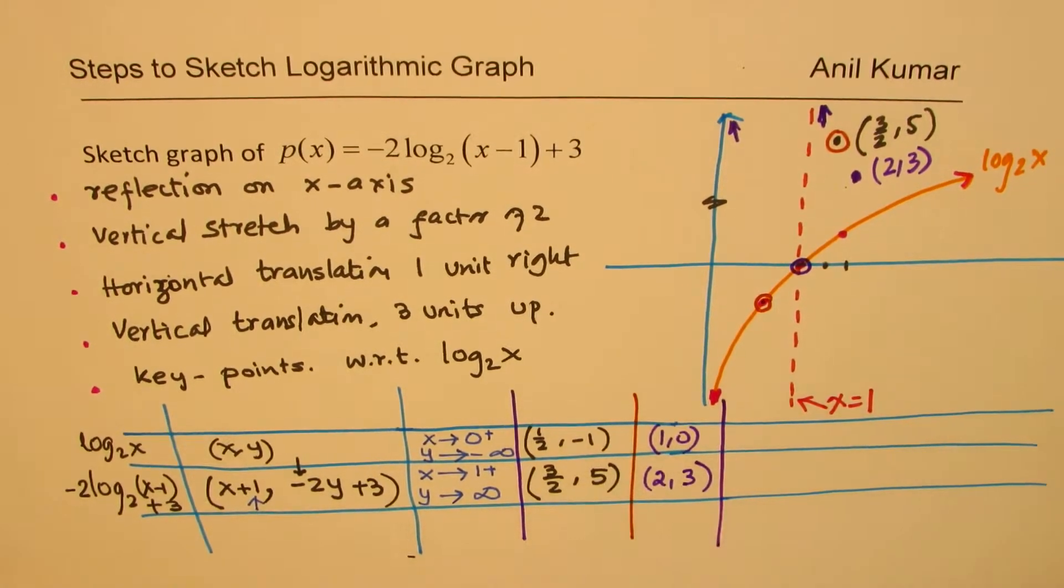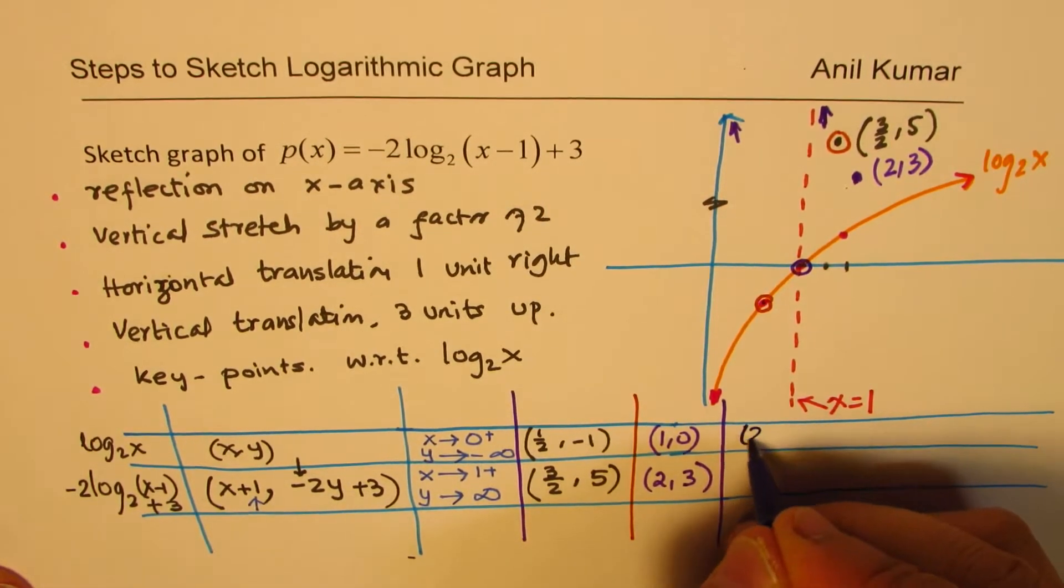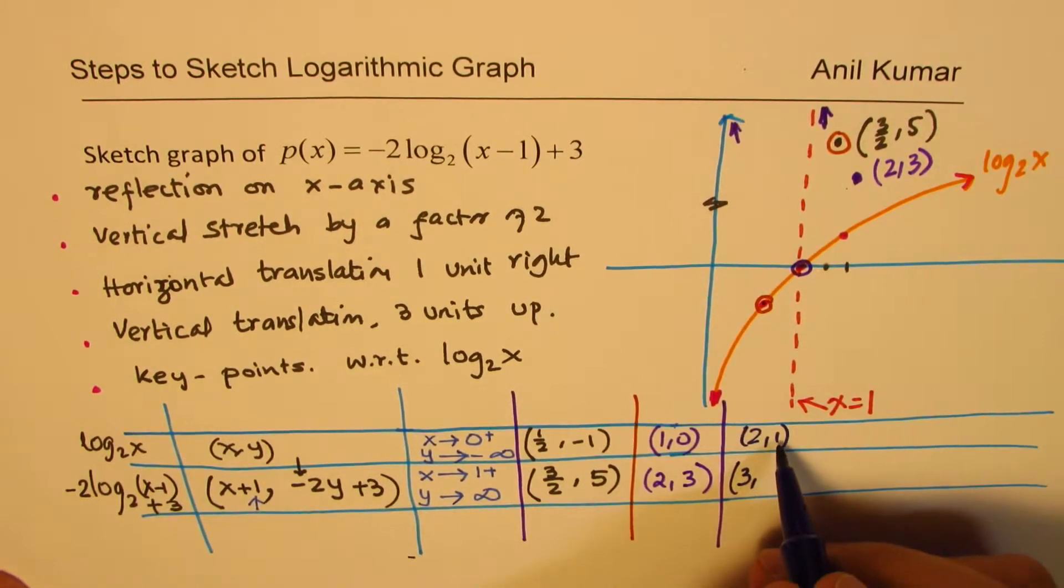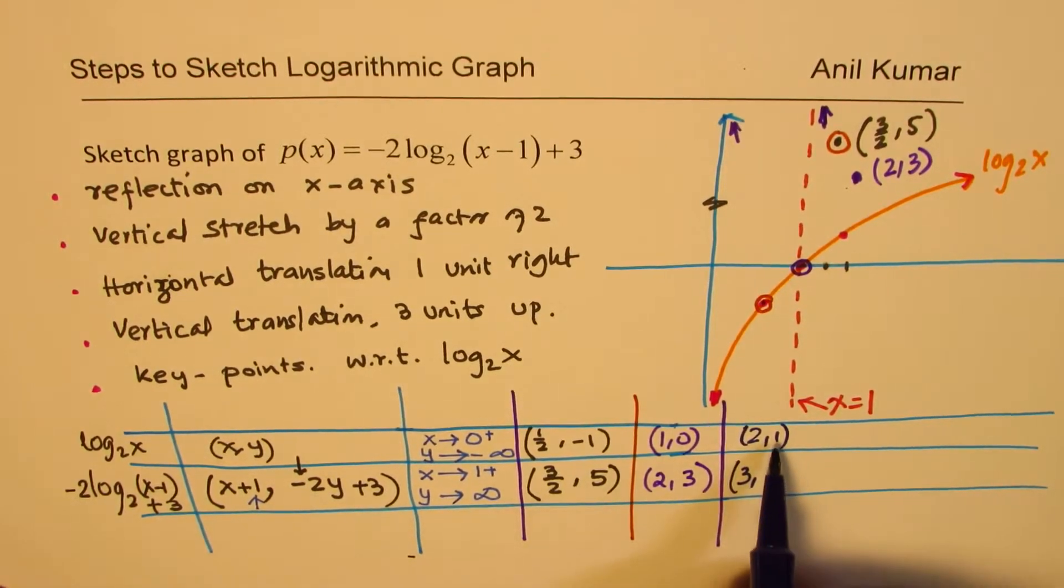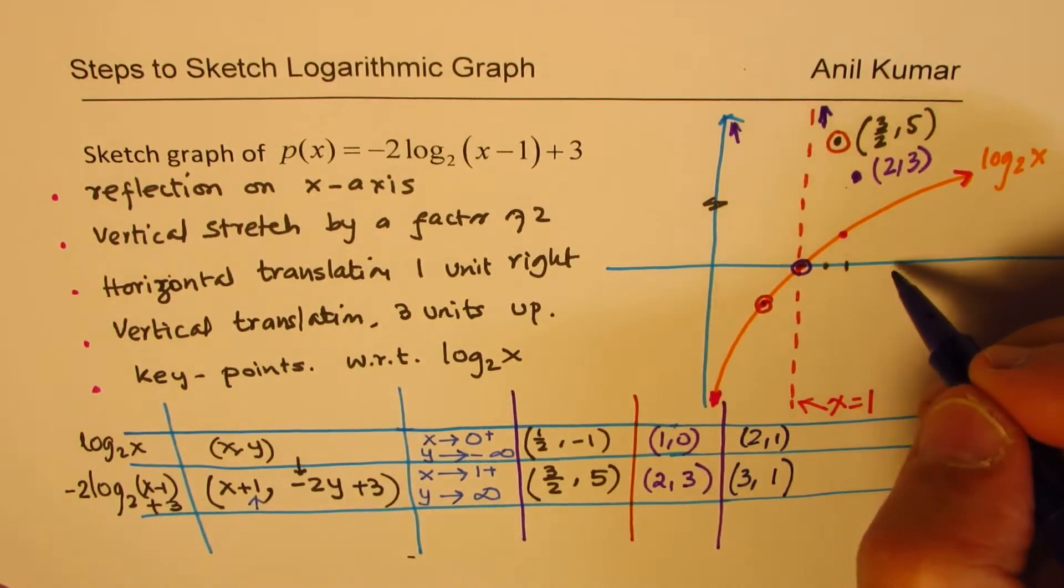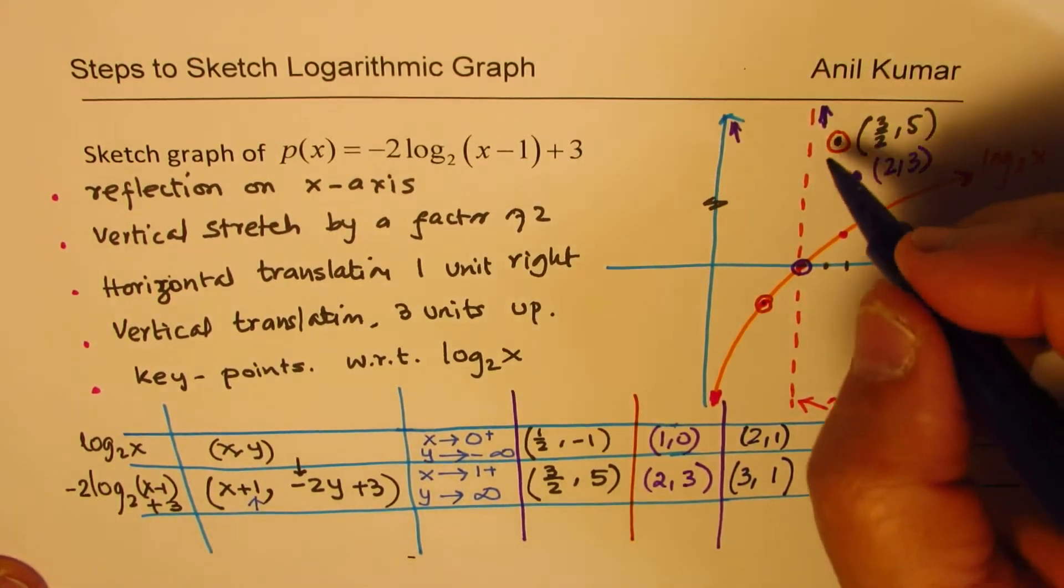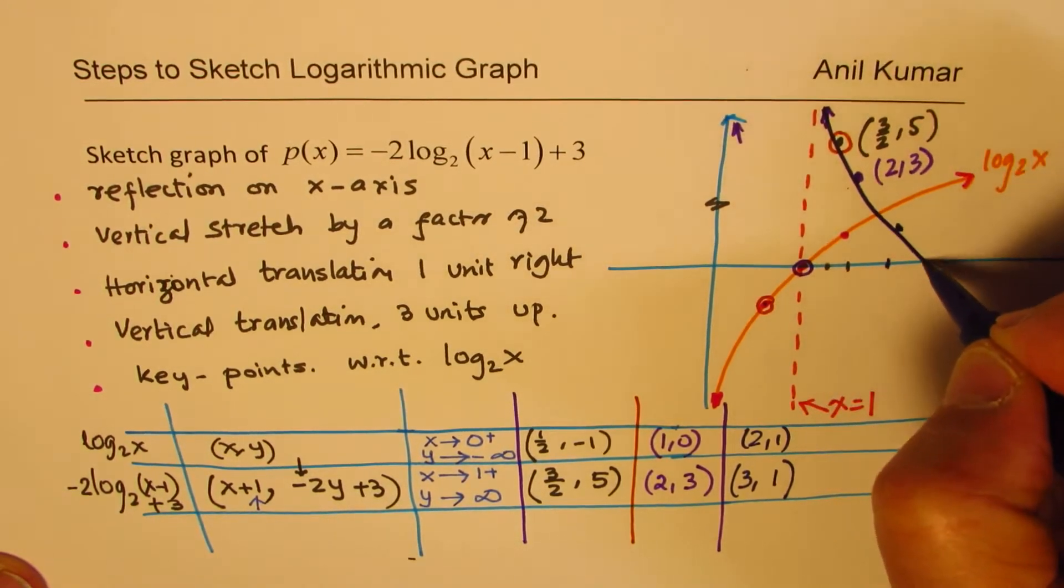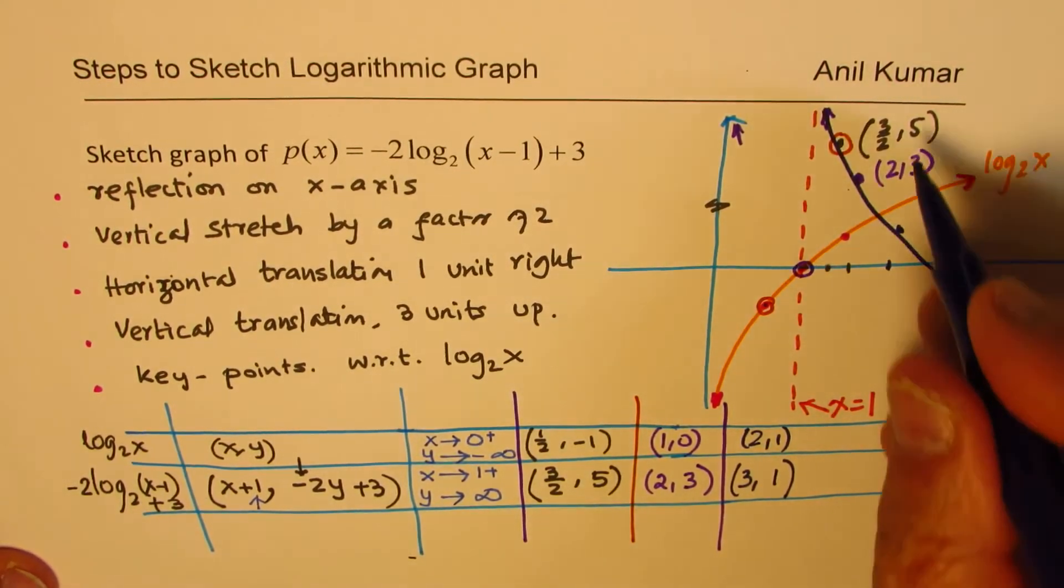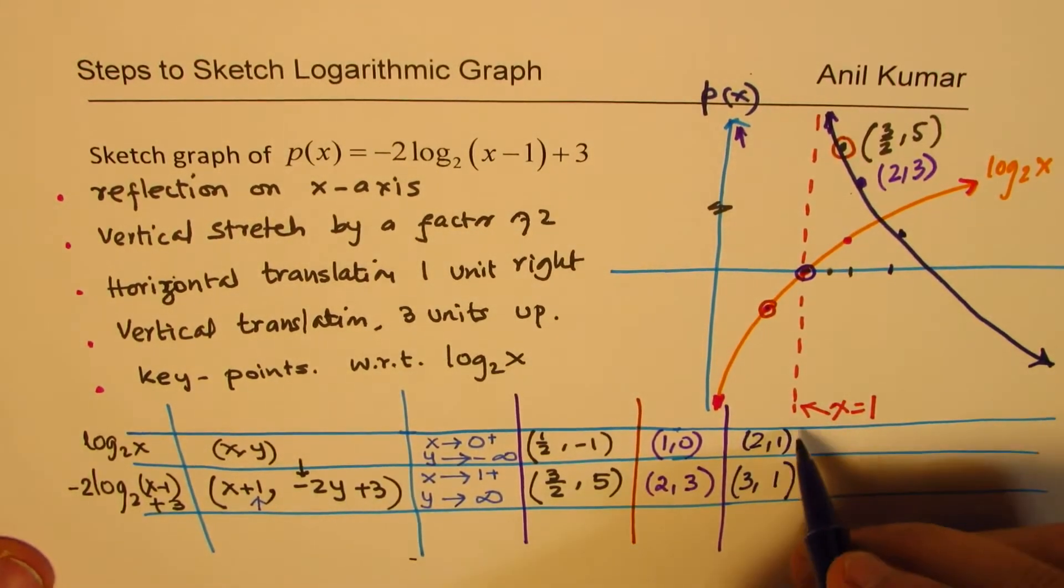Now the third point which is a key value for us is at 2, the value was 1 in the original function. So 2 I'm going to add 1 to it, it becomes 3. To 1 I'll multiply by negative 2, it becomes negative 2 plus 3 will give me positive 1. So the third point moves to a position which is 3 units away but 1 up. So 1 up. So you see how we are getting this graph. So this graph here is kind of like this. Does it make sense? So that is the graph of our function p of x.